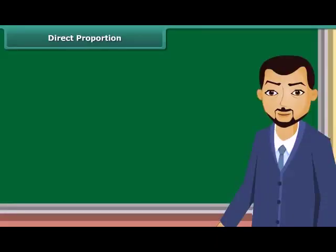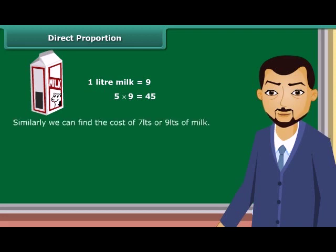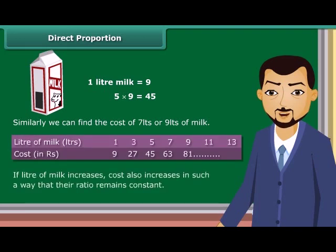Direct proportion: If the cost of one liter of milk is rupees 9, then what would be the cost of five liters of milk? It is rupees 45. Similarly, we can find the cost of 7 liters or 9 liters of milk. If liters of milk increase, cost also increases in such a way that their ratio remains constant.